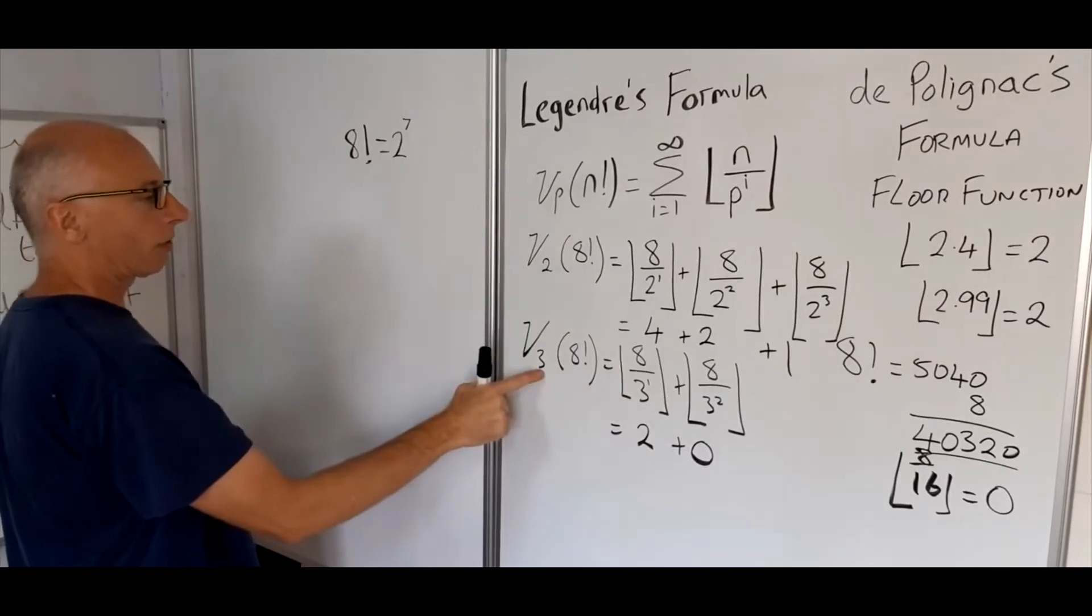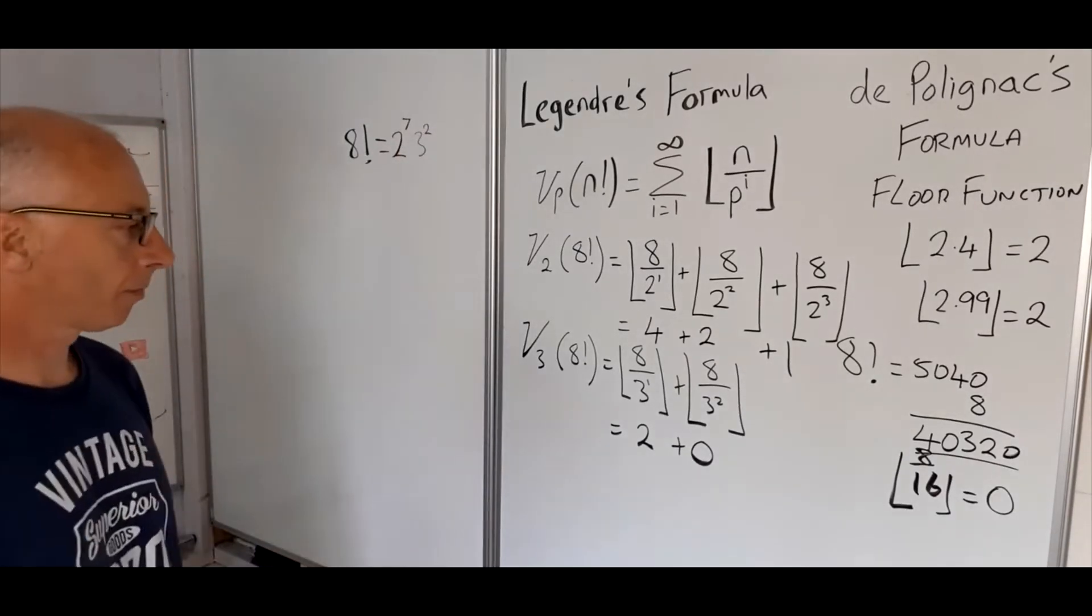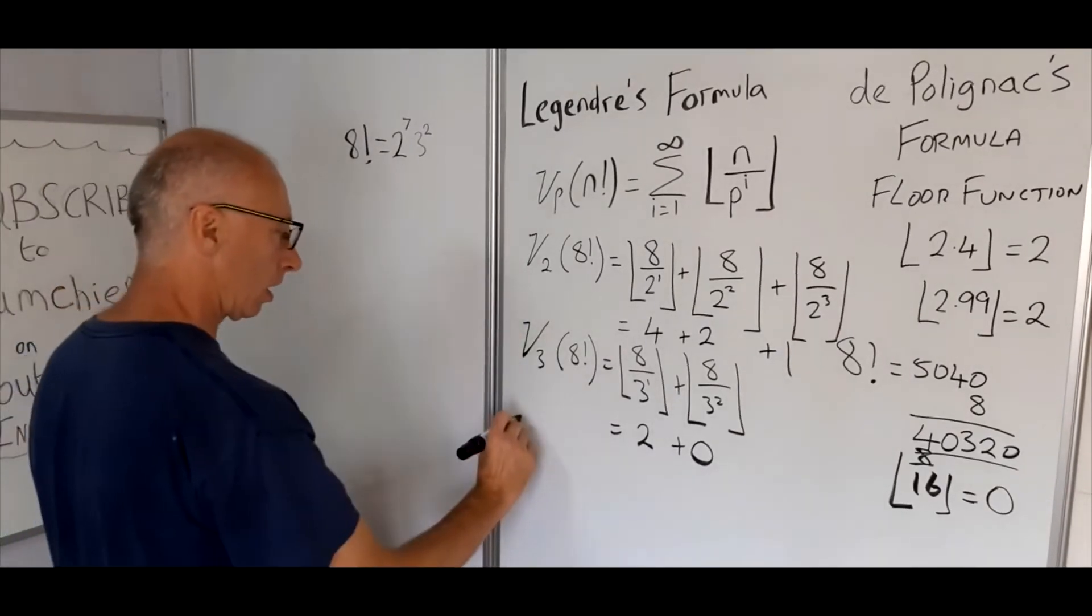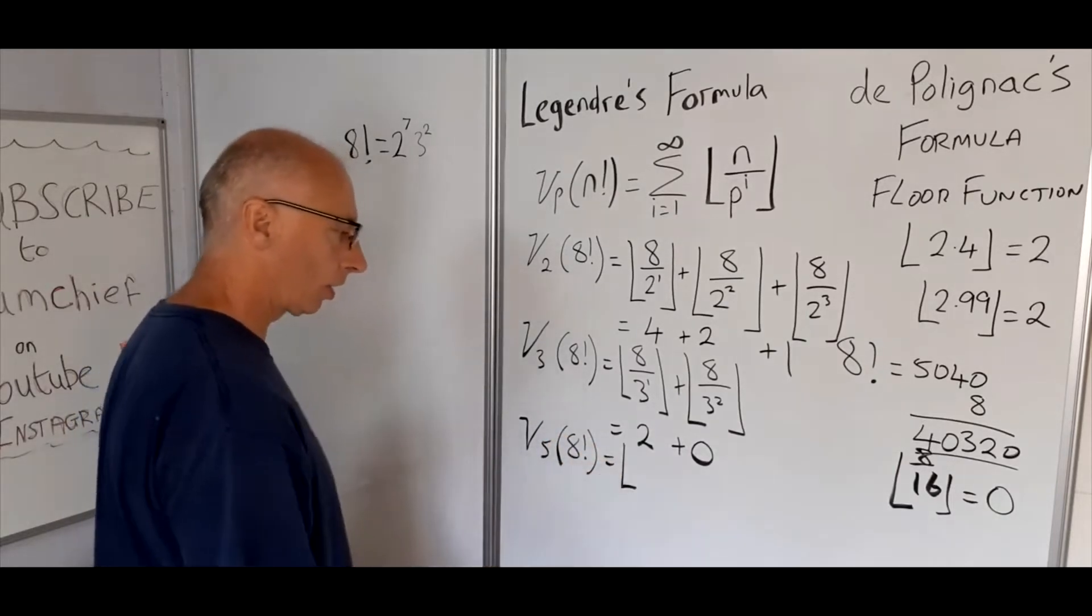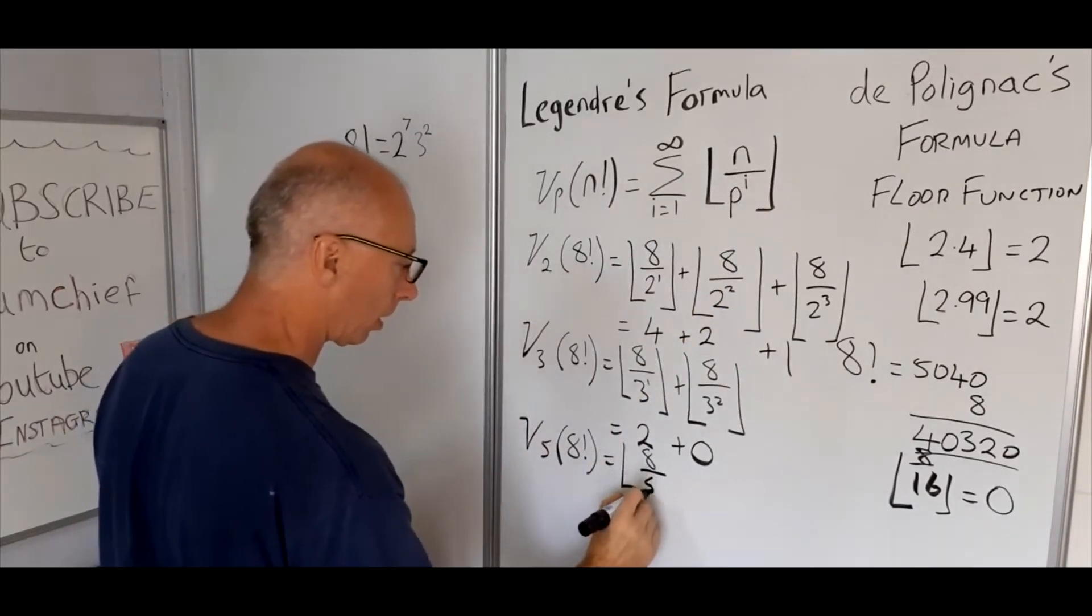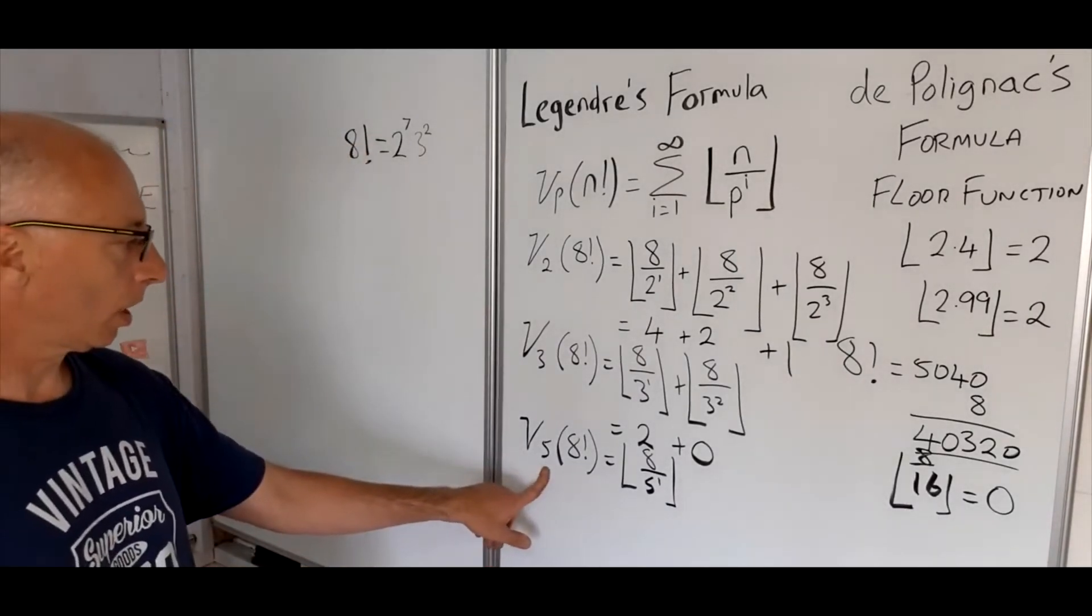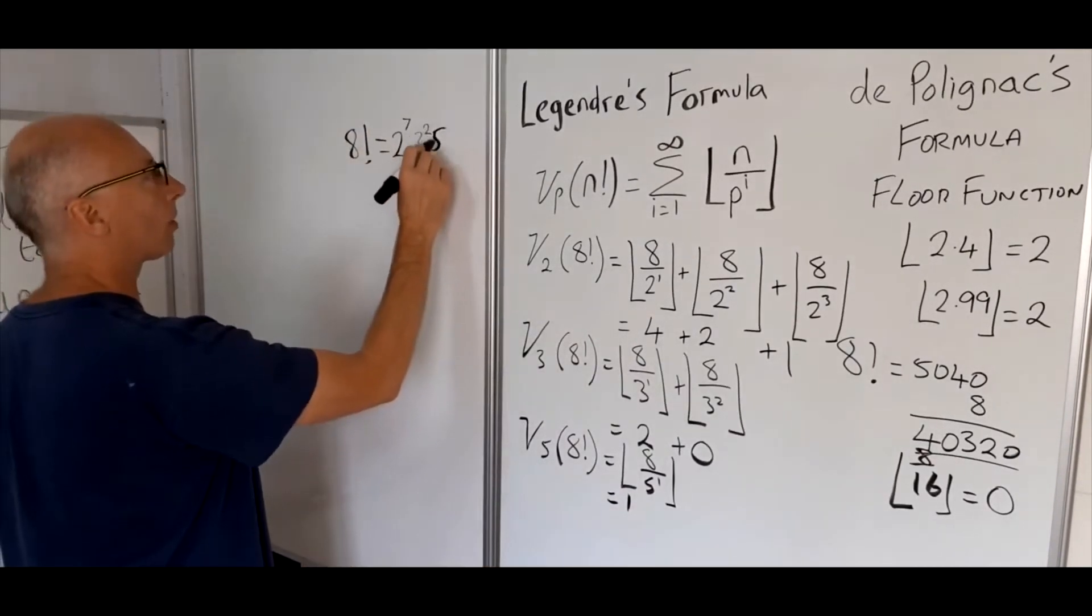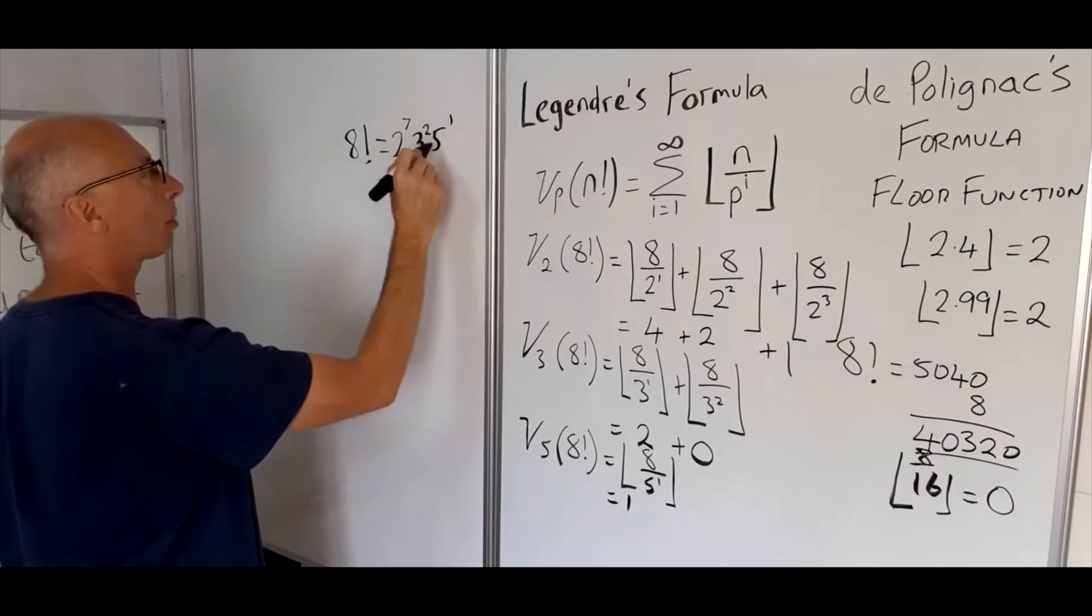So now what we do is we know it's got 3 to the power of 2 as part of its prime factorization. Now let's try number 5, that's the next prime factor in here. So nu_5 of 8 factorial. Floor function, n is 8, p is our prime number 5 to the power of 1. So the prime factorization of that is just going to be 1. So now we can say it's also 5 to the power of 1. Let's write this a little bit neater so it's a bit clearer: 3 to the power of 2, 5 to the power of 1.